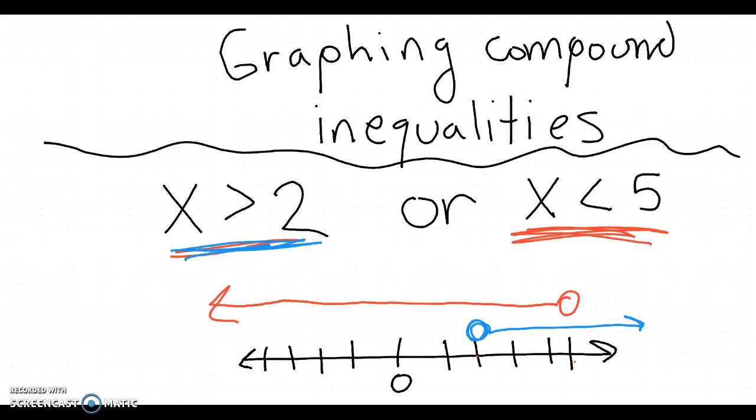My graph is just those two things, and I graph them separately because I have an or. It's going to be really important in a second that we know the difference between or and and. So in this example, or will tell me to just graph two separate inequalities.